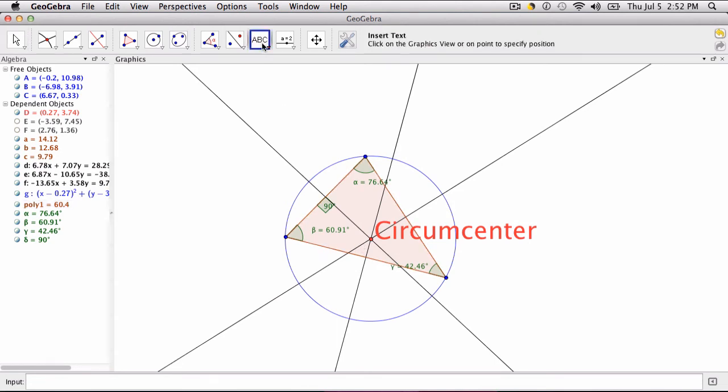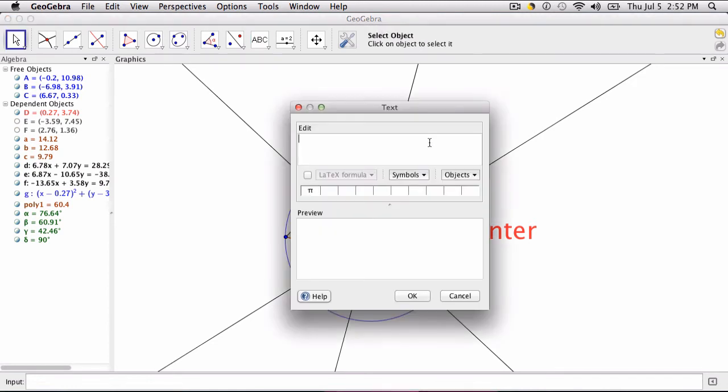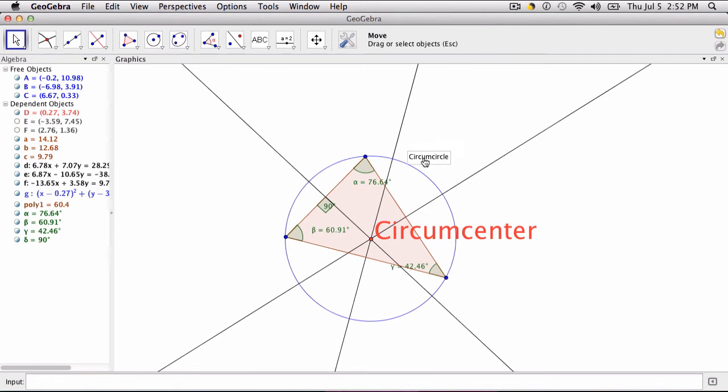You can label your circle by clicking the text tool and typing in circum-circle. The problem here with this is that you can't attach text to an object. You can only attach it to a point.